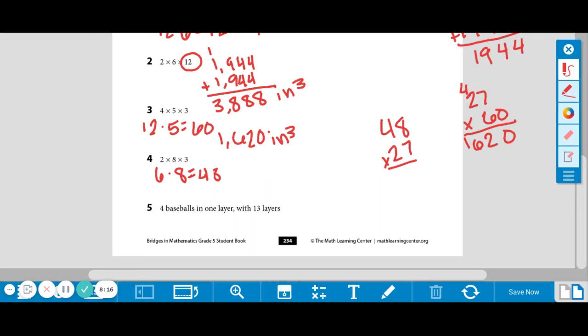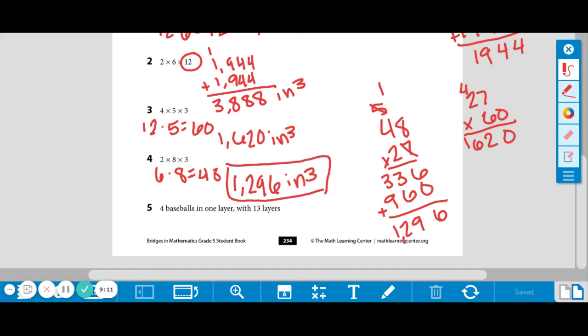Times 27. Okay. So 7 times 8 is 56. 7 times 4 is 28. Plus 5 more is 33. We're going to place our zero for our place value, because we're moving over. 2 times 8 is 16. Carry your 1. 2 times 4 is 8. Plus 1 more is 9. We add these up. 1,296. I'm going to circle that because my work is starting to get lost.